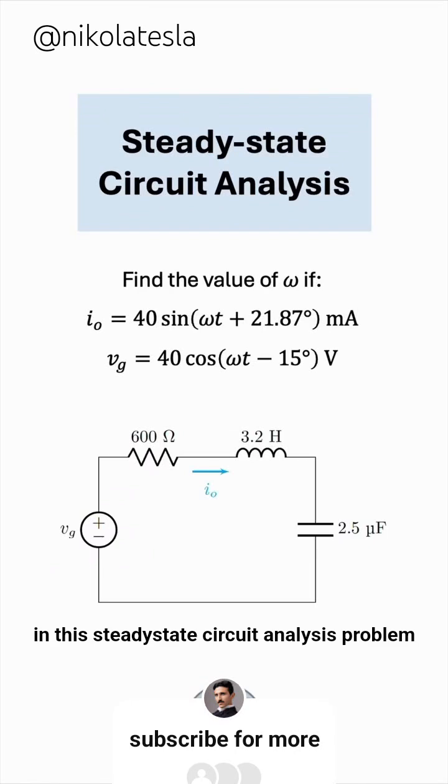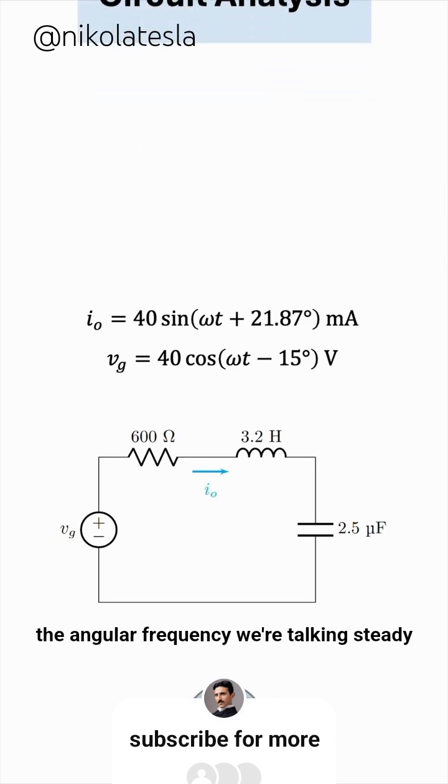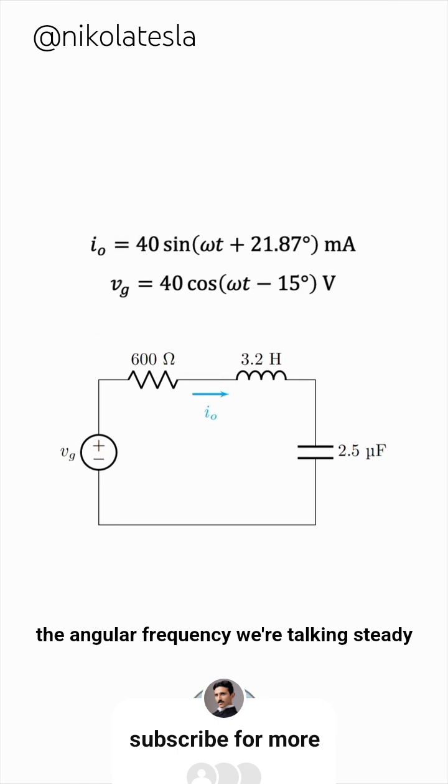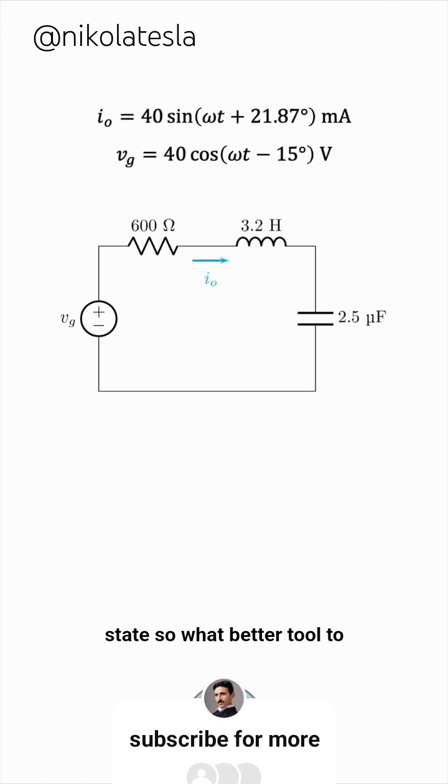In this steady-state circuit analysis problem, we're given the current and voltage and we're required to find omega, the angular frequency. We're talking steady-state, so what better tool to use than the phasor transformation?